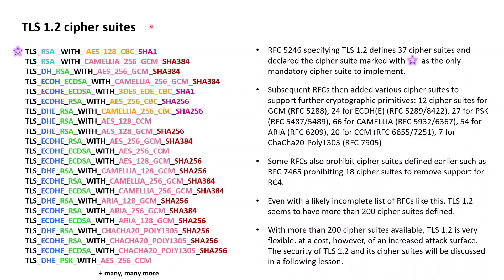Blue is used for the parts specifying the key exchanges. Green is used for the parts specifying the means of authentication of the server. Orange and pink mark the parts for the ciphers used to encrypt and/or authenticate the application data.